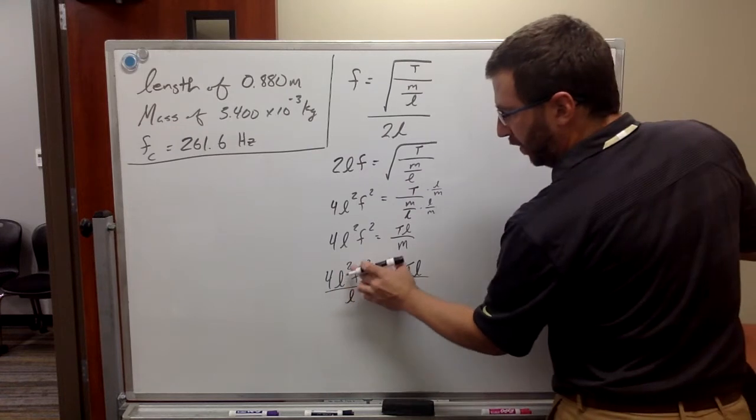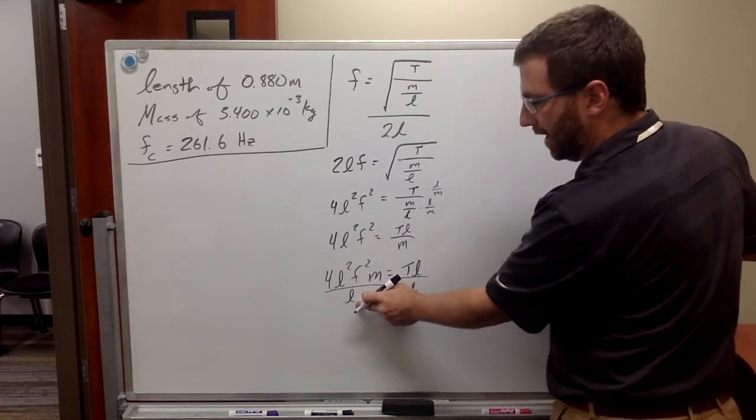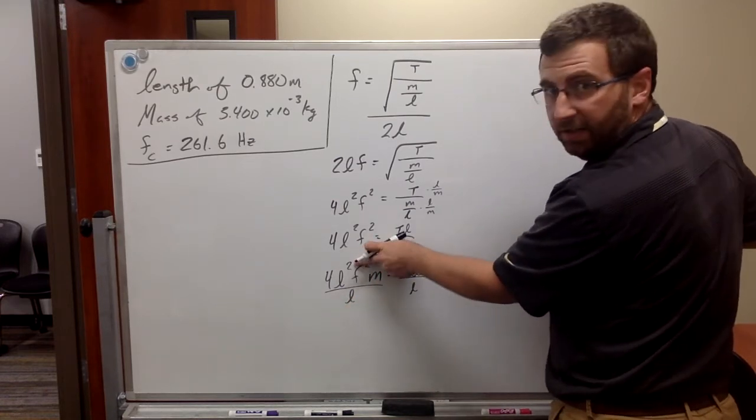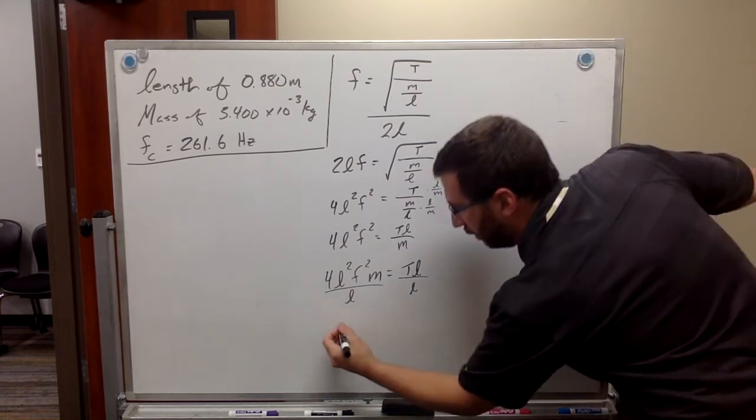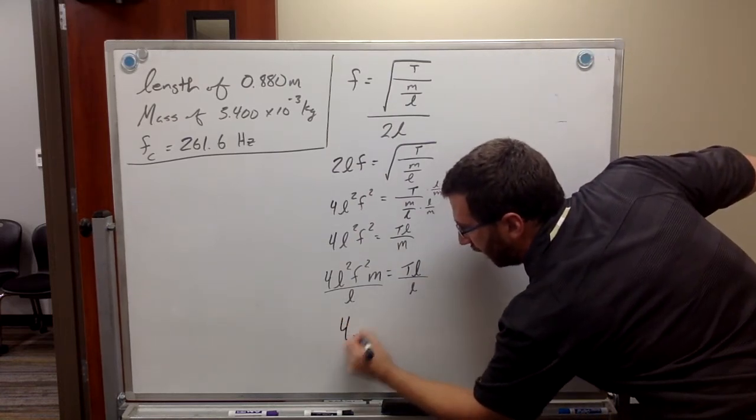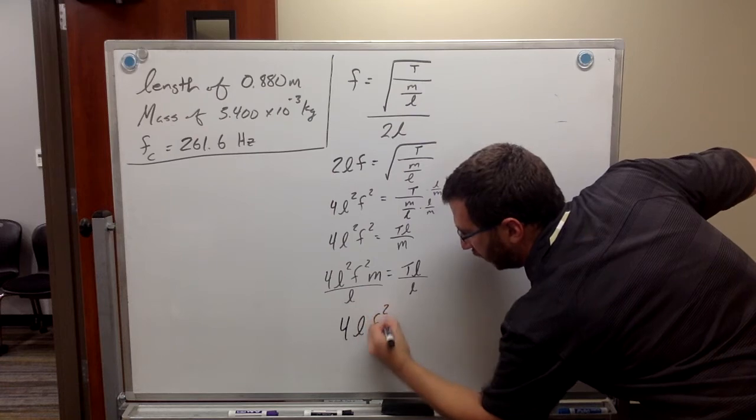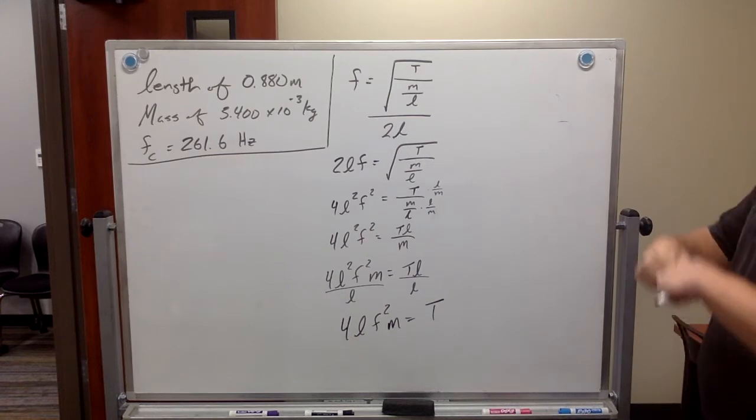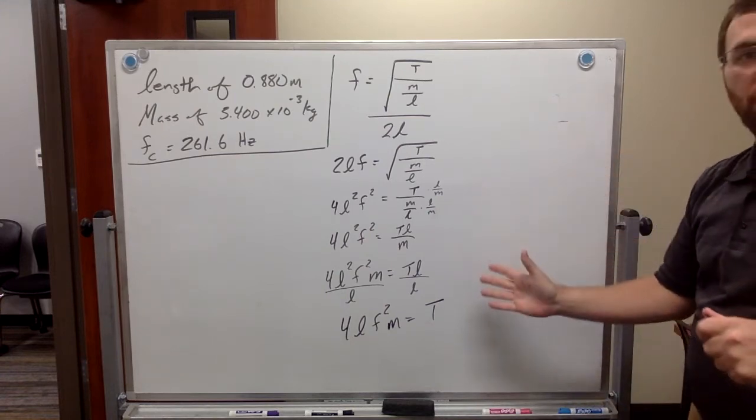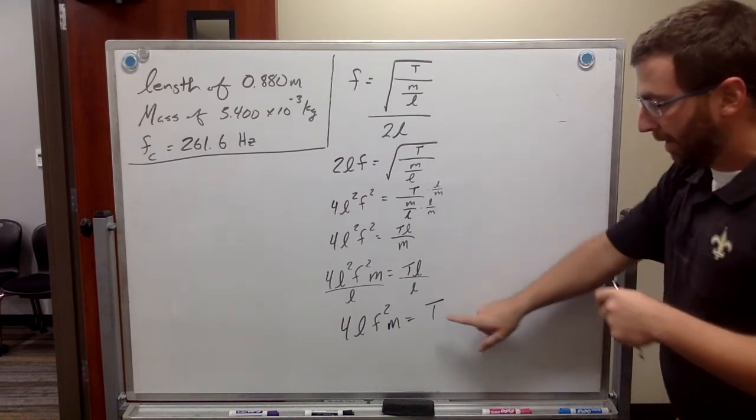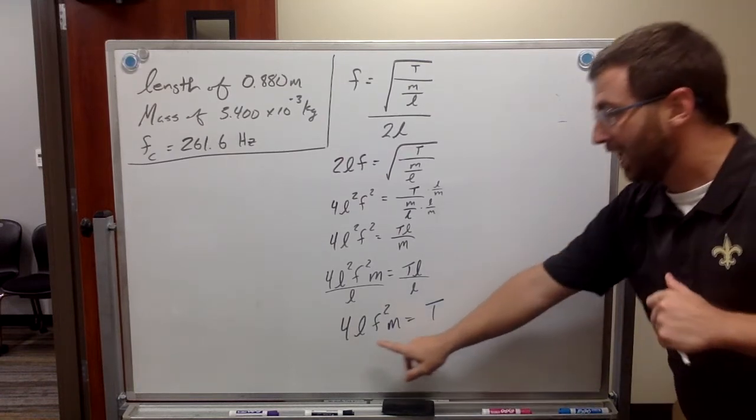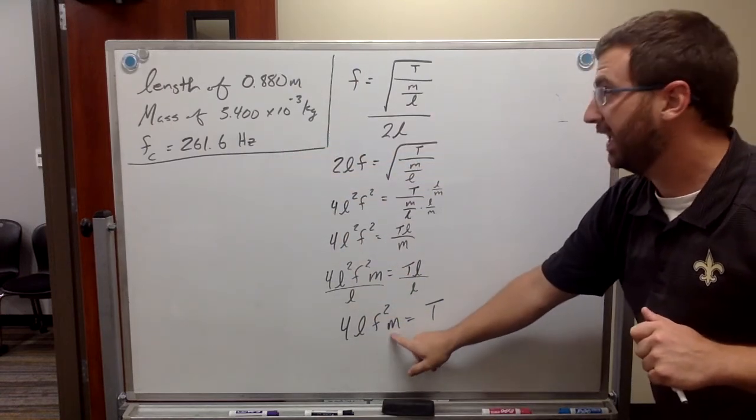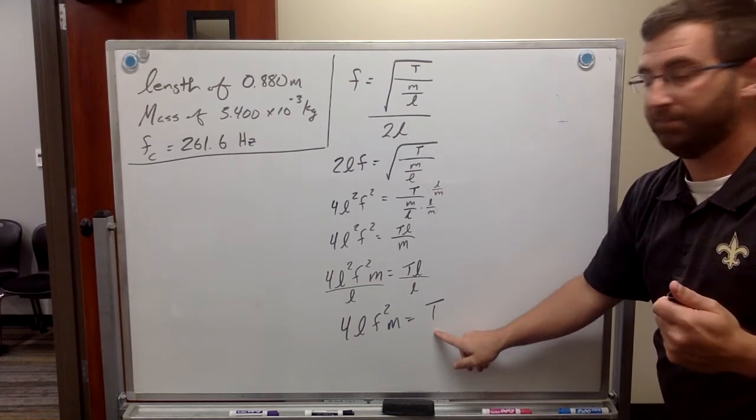See, we haven't even gotten to the actual problem yet. This is all formula manipulation. It's all algebra stuff. Now, get T by itself. We divide both sides by that L. Now, so, we have two Ls on top here. We've got one L on the bottom. So, that means this L is going to cancel out on the bottom, and this 2 up on the top right here, where my finger's at, that's going to go away. So, our final equation would be 4L F squared M equals our tension.